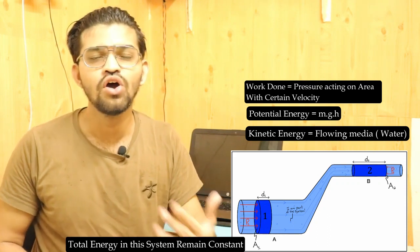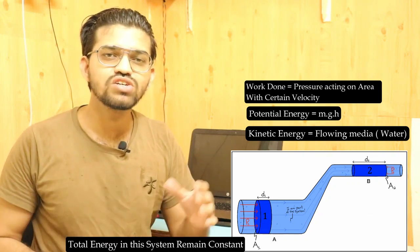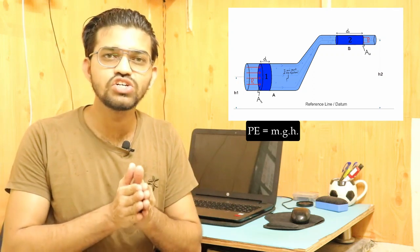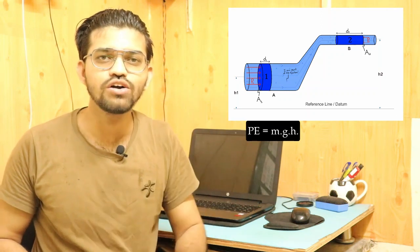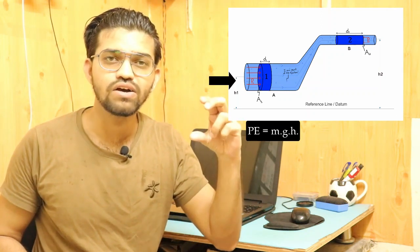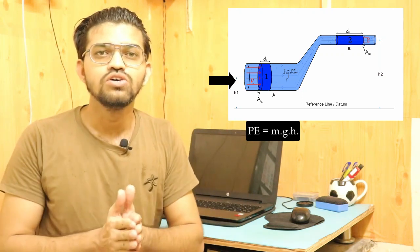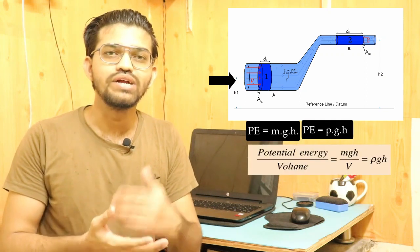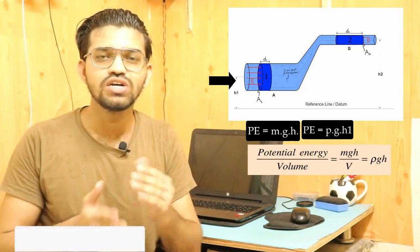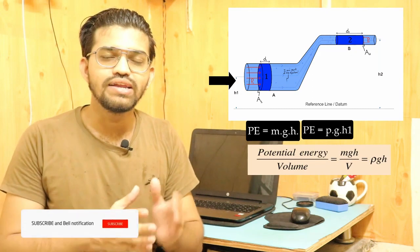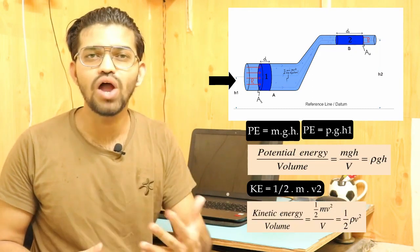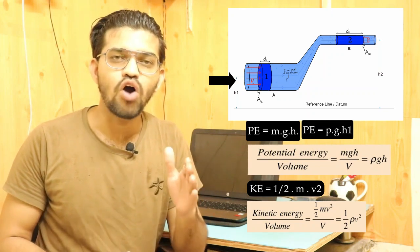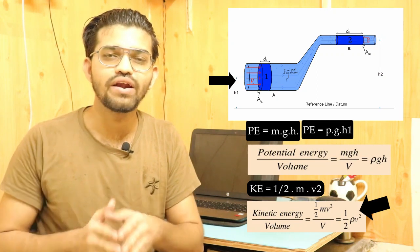For the potential energy of flowing fluid, the formula is mgh, where m is mass, g is acceleration due to gravity, and h is the reference height from the datum or reference line. Since in fluids we use density instead of mass, potential energy per unit volume becomes ρgh. For kinetic energy, the formula is half mv², and replacing mass with density gives ½ρv².